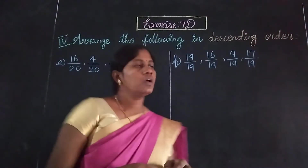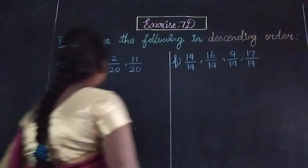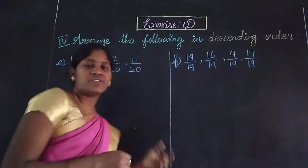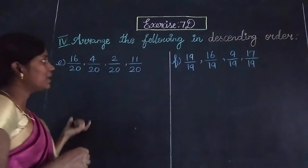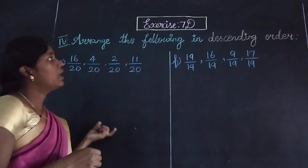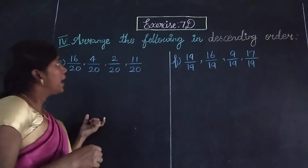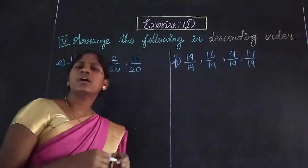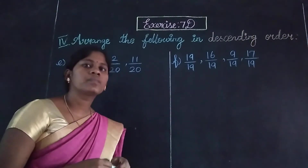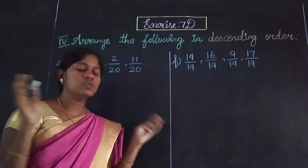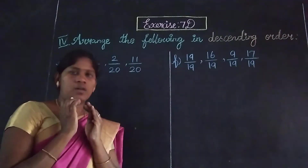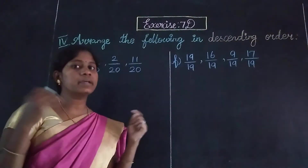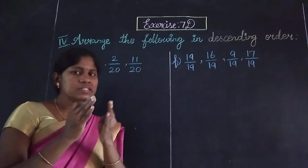Welcome students. Now the 4th Roman E and F. Now, last sum: arrange the following in descending order. How do you write the descending order? Big to small. As you write the descending order, the biggest number comes first and the smallest number comes last.